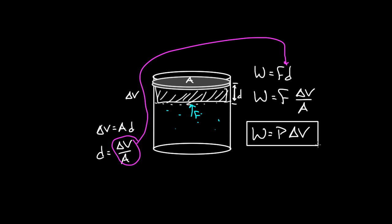W = P·ΔV is a useful equation in thermodynamic quantities, but strictly speaking it's only true if the pressure remained constant. If the pressure is changing, what do you plug in — the initial or final pressure? If pressure stays constant, this gives you an exact way to find the work done. You might ask how it's possible for a gas to expand at constant pressure — basically you have to heat it up while the gas expands, which allows the pressure to remain constant.